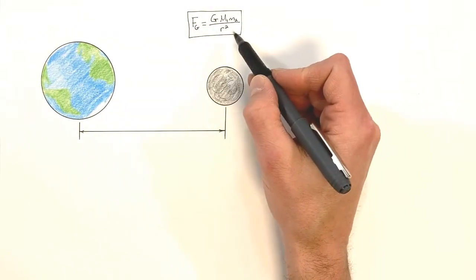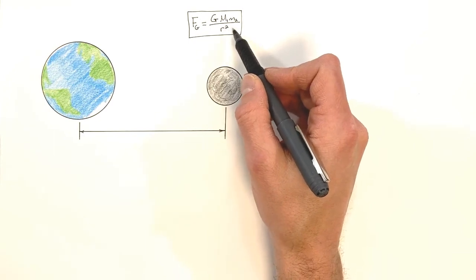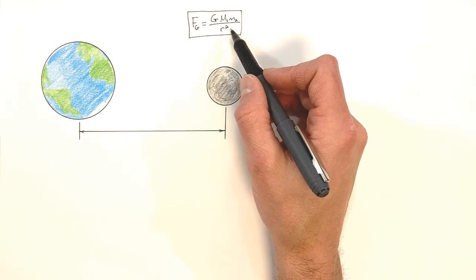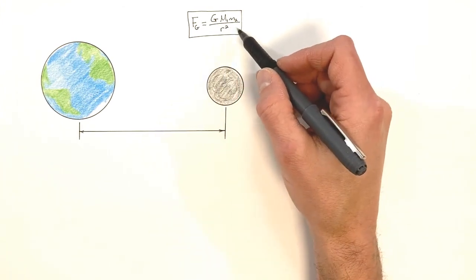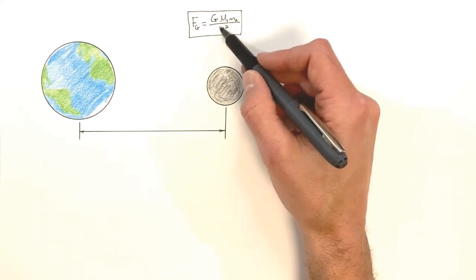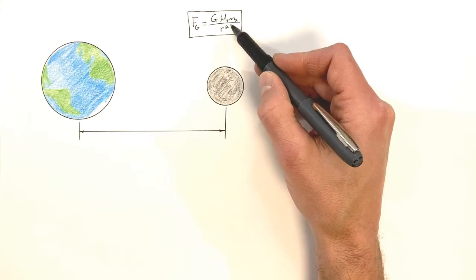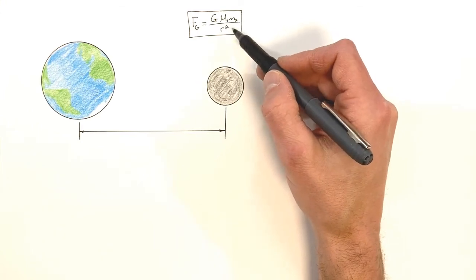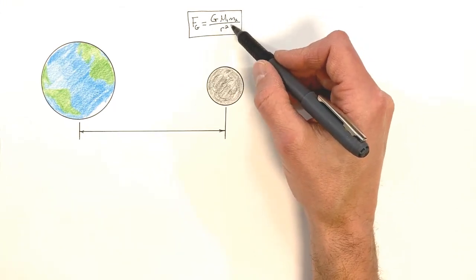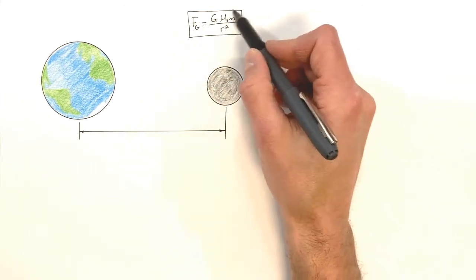What this law describes is the gravitational force between any two objects anywhere in the universe — it's a universal law. When you get into really extreme situations like black holes, or really small quantum situations, this breaks down a bit. But for most of the things that we deal with on a regular everyday basis, this is what we would consider to be a universal law.